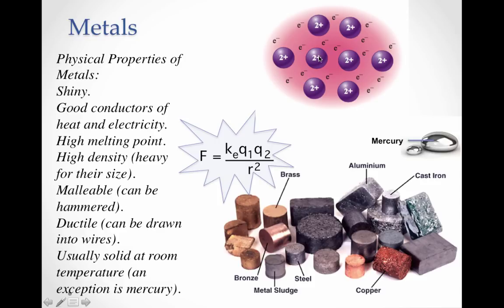They're malleable, like I said, because when you force one, they kind of move over for each other but they stay locked in. So they can be hammered into different shapes. They're ductile—they can also be stretched into wires in different shapes. And they're usually solid at room temperature, except for mercury, which has some interesting properties that make it a liquid at room temperature.